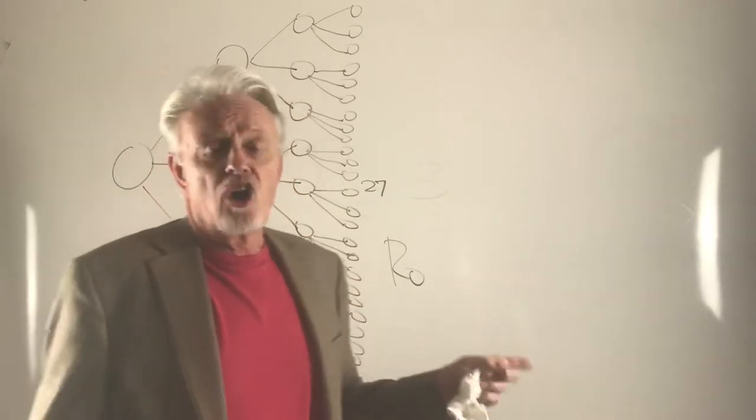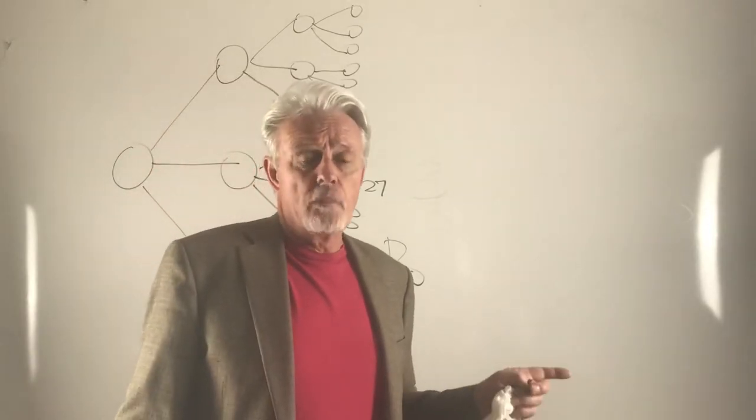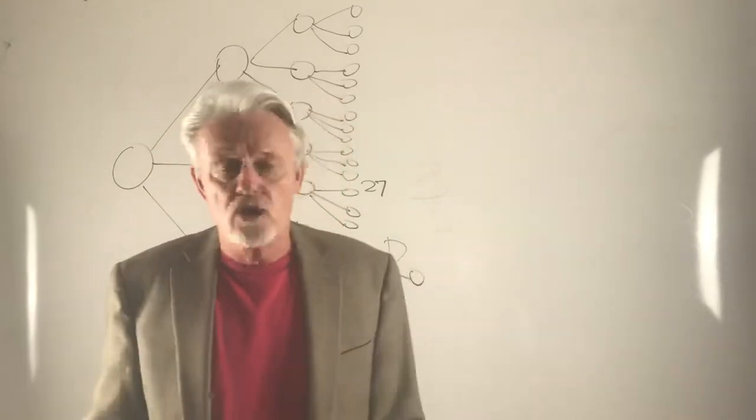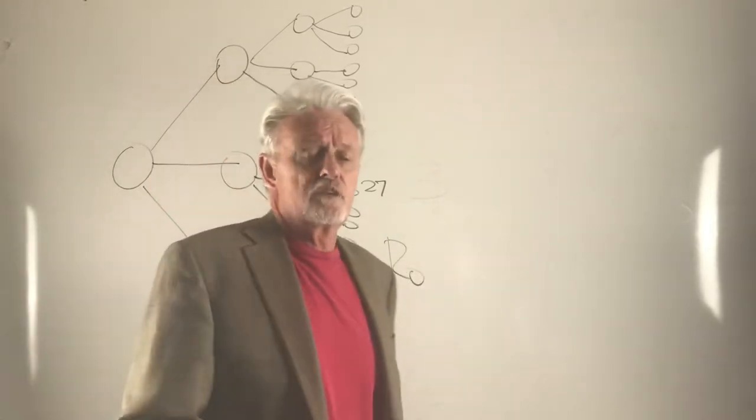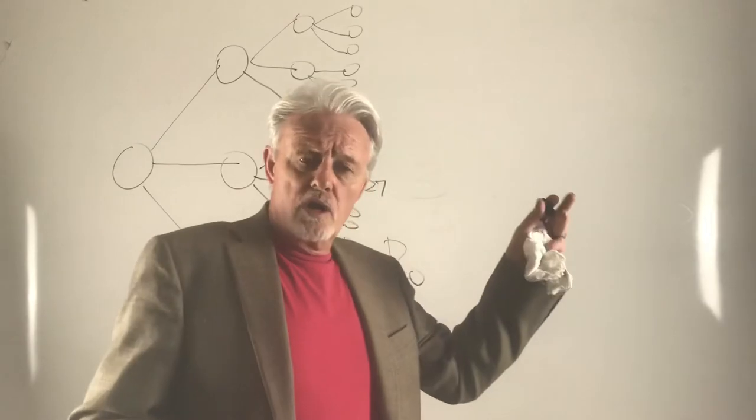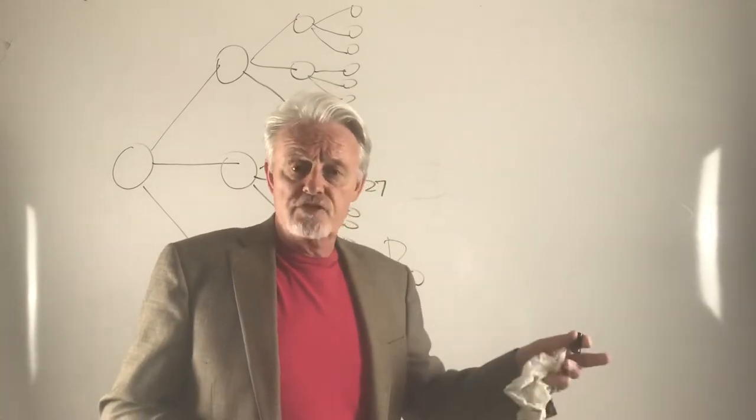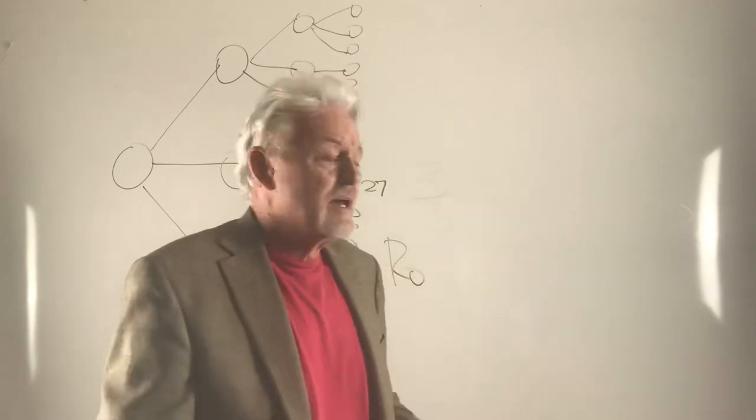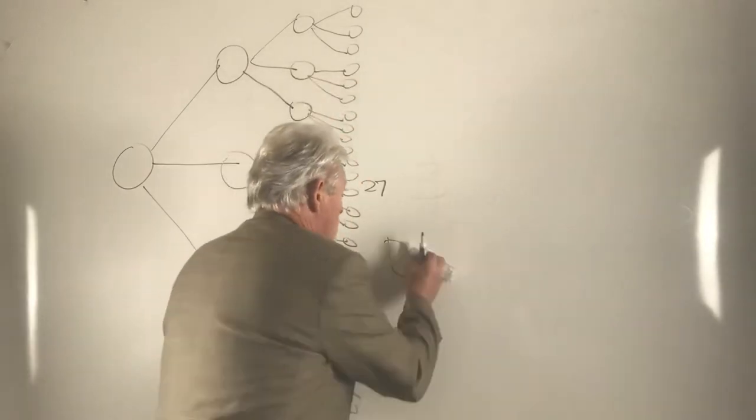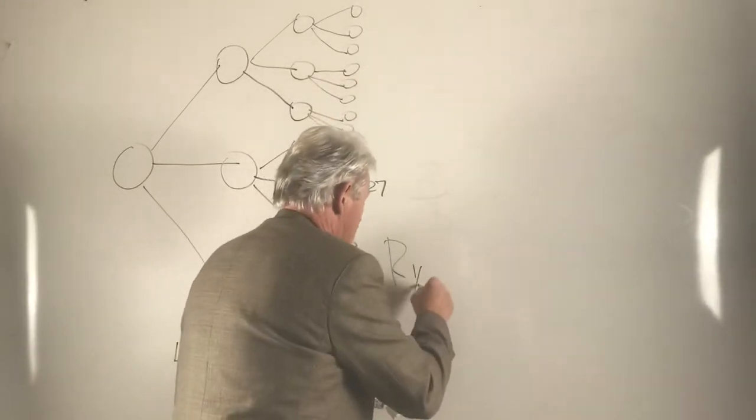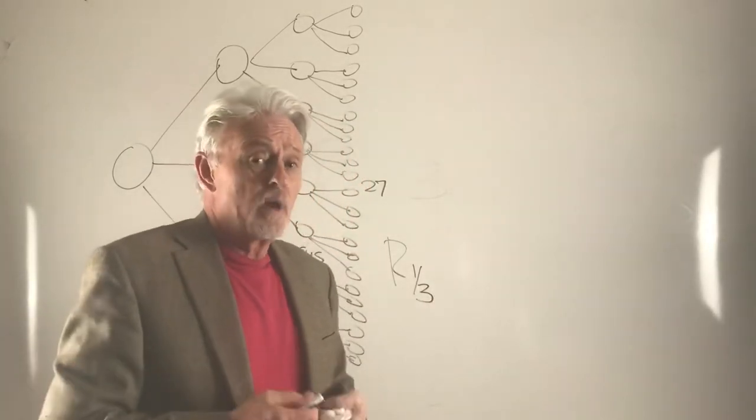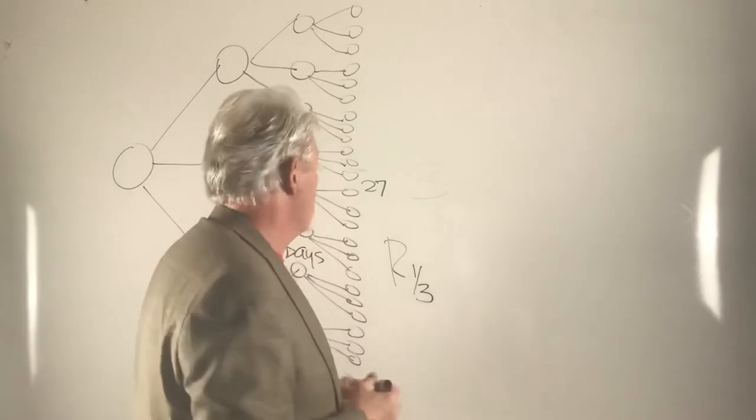Can we achieve an R of zero? No, it's probably not possible. You've got infected people in hospitals, people who've got to take care of those people, grocery store folks who are going to give us food. Let's make R one-third and see what happens. An R of one-third is quite possible.